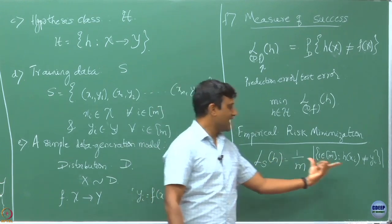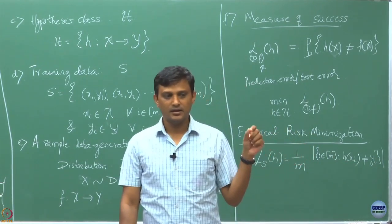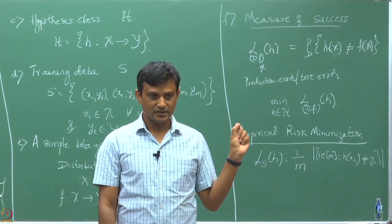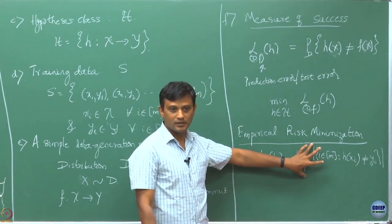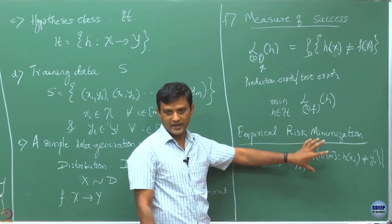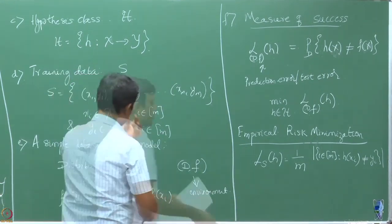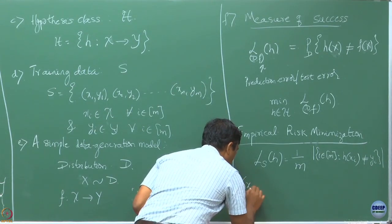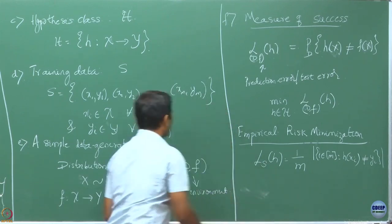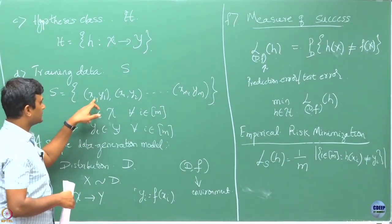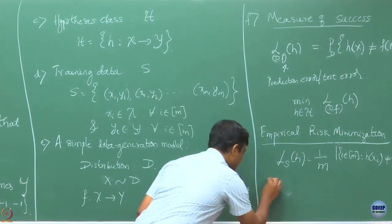I am taking the cardinality, so the numerator tells me the number of points where my hypothesis H has made incorrect predictions, and I am dividing by M. So this quantity is telling me the fraction of the points on which my hypothesis has made a wrong prediction. Henceforth, X_i, Y_i — so X_1, Y_1 — are one sample, but instead of writing them individually I will write them as capital X and Y.